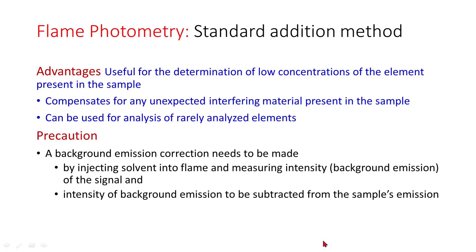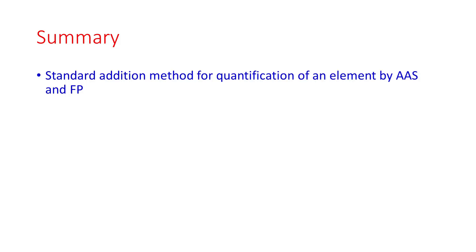Precaution: a background emission correction needs to be made by injecting solvent into flame and measuring intensity, that is background emission of the signal. And intensity of background emission needs to be subtracted from the sample's emission.